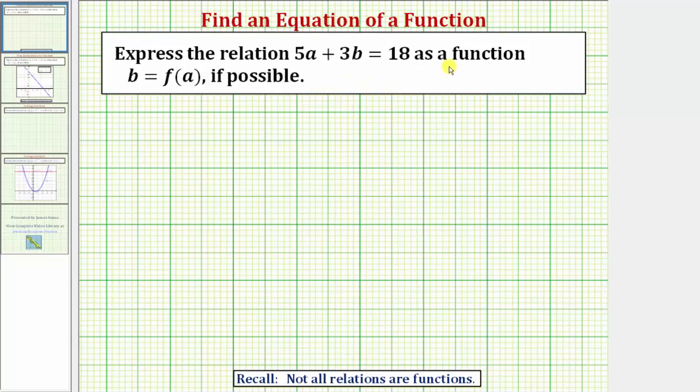We were asked to express the relation as a function b equals f of a where a is the input variable and b is the output variable. So because we want a function of a, we want to solve the given relation for the output variable b.